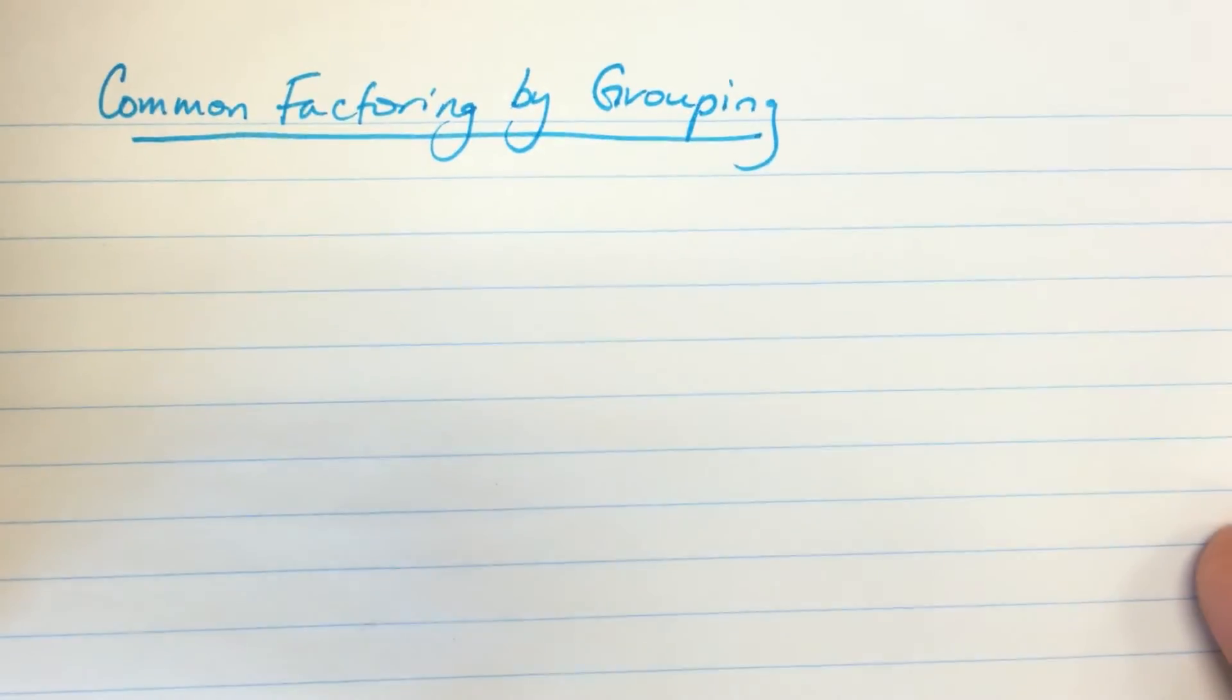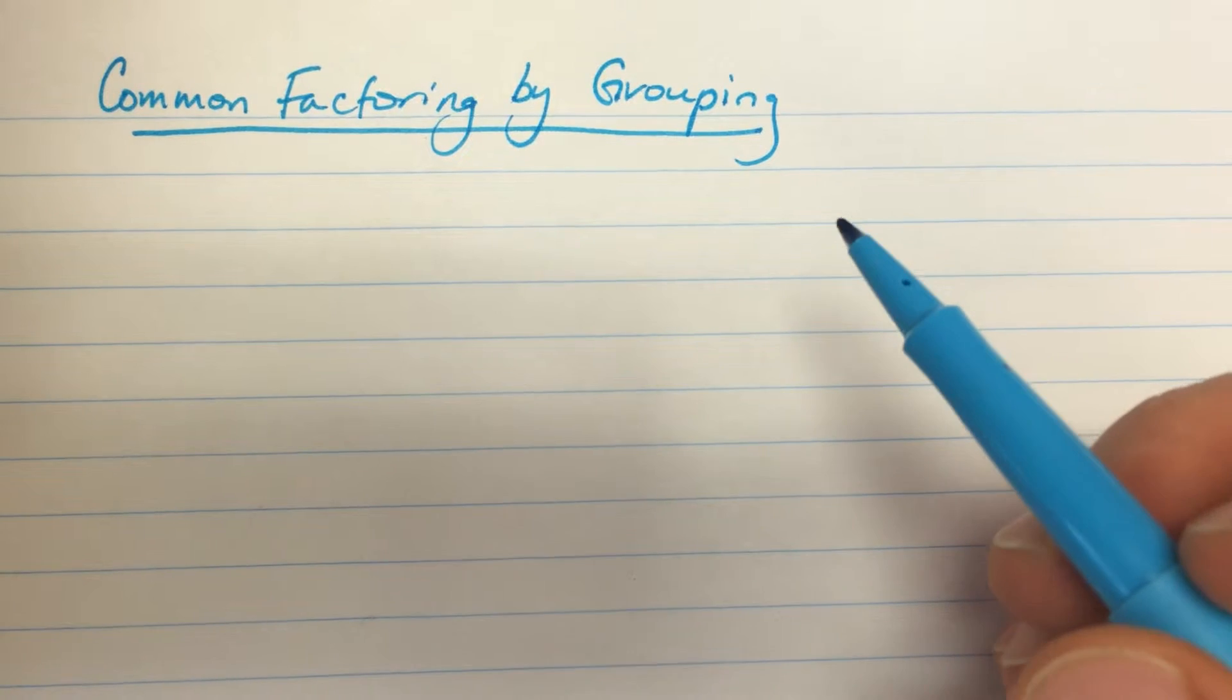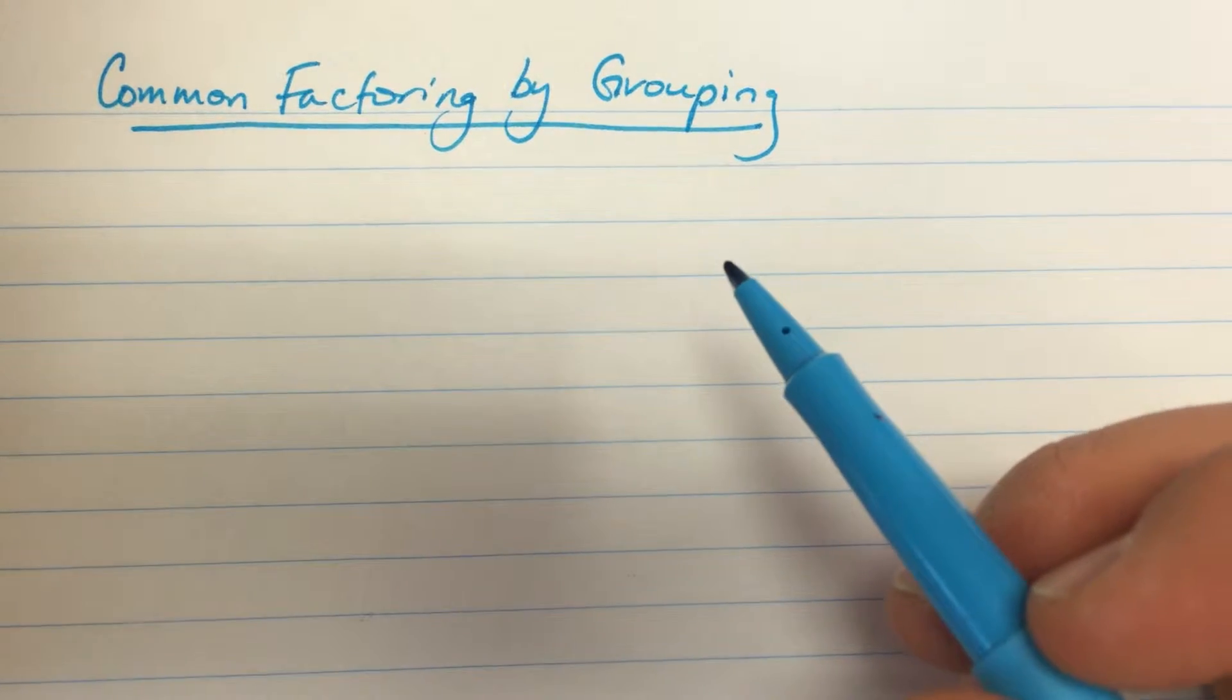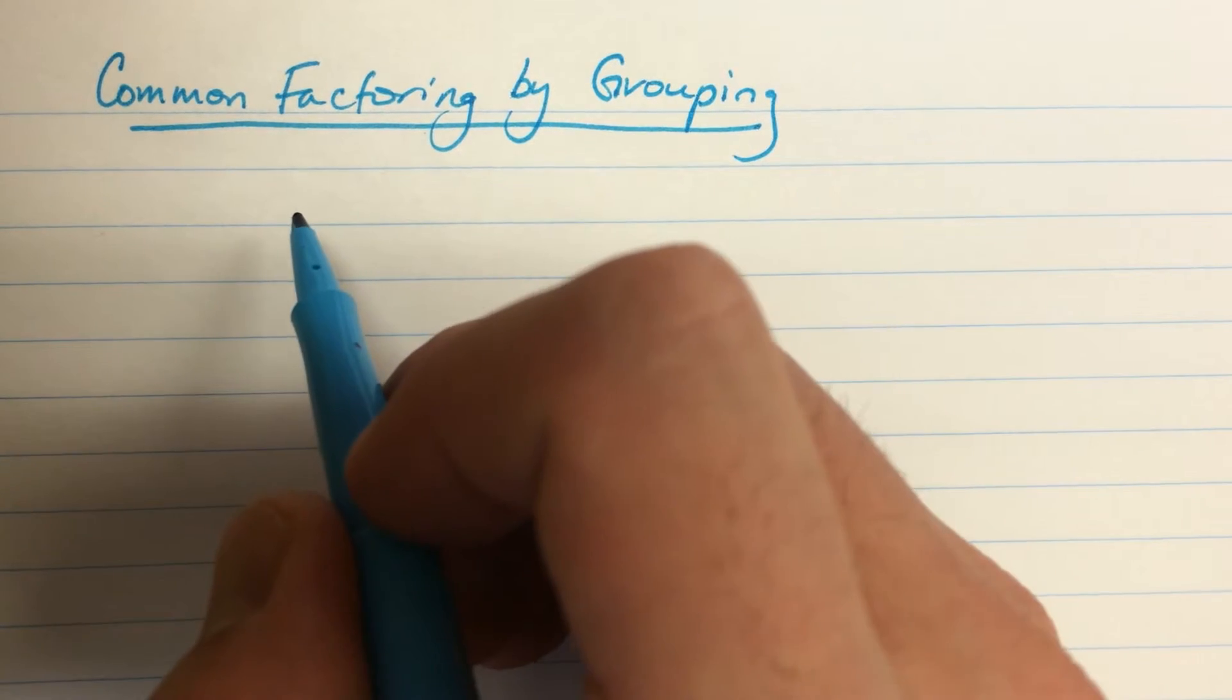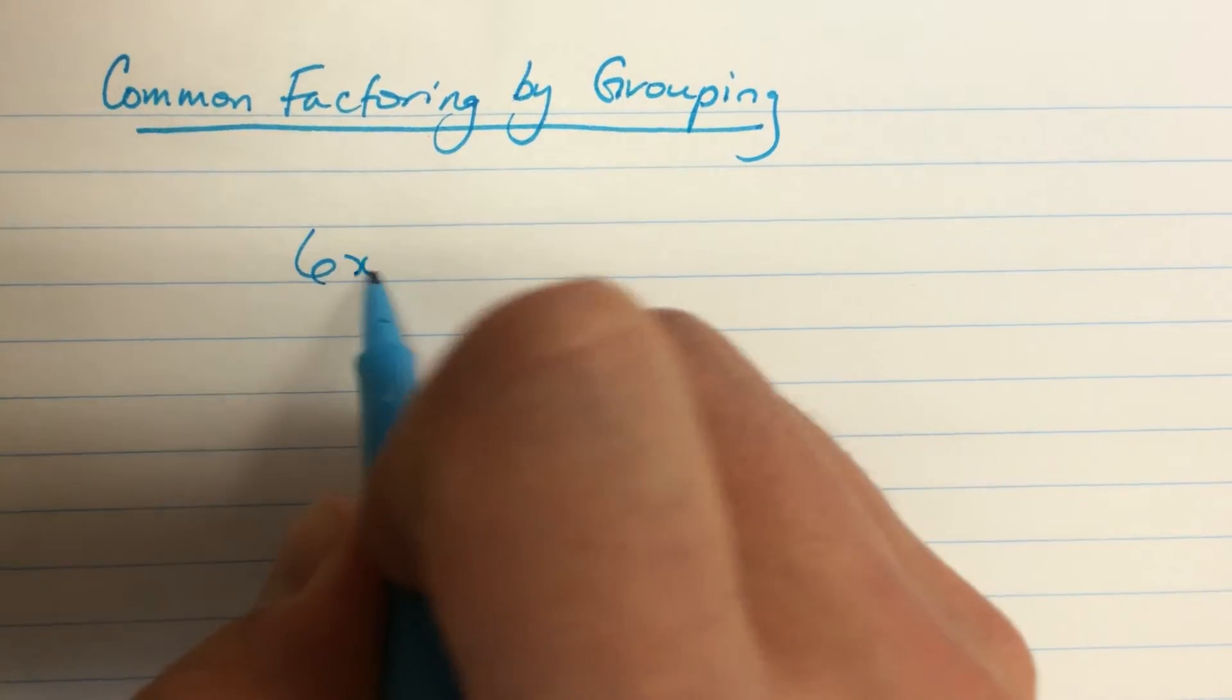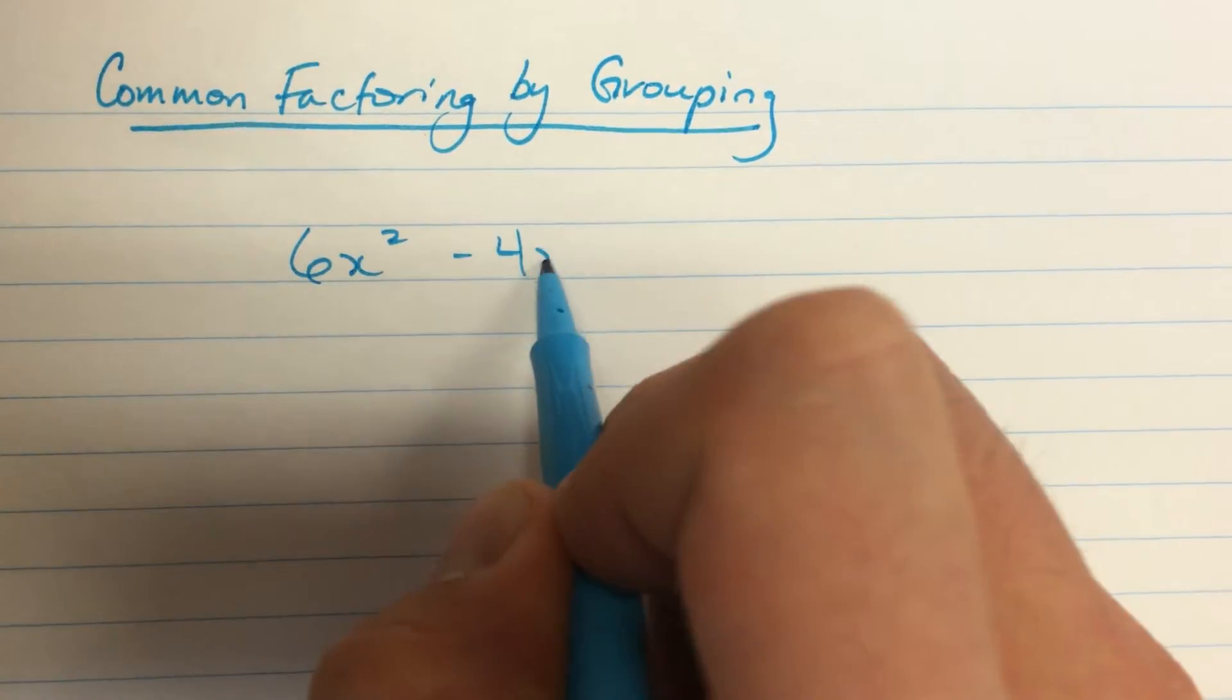The other kind of factoring that we often need to do, and we will need to do this a lot for factoring trinomials, is called factoring by grouping. And so I'll give you an example of an expression that we can factor in this way.